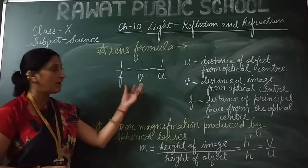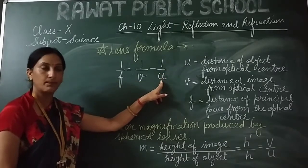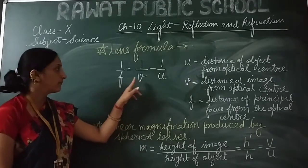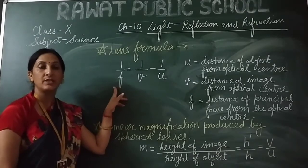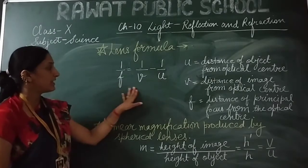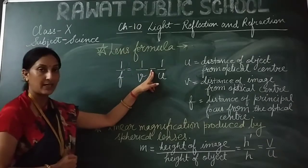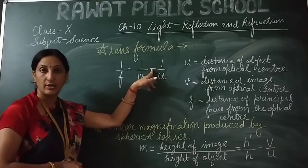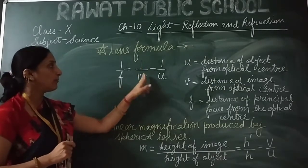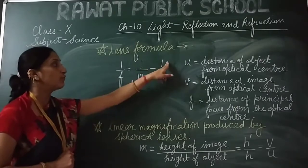I think we know this very well. U is the distance of the object from the optical center. V is the distance of the image from the optical center. And F is the focal length — the distance of the focus from the optical center. Always keep in mind: for the mirror formula we use 1/V + 1/U, and for the lens formula we use 1/V − 1/U.